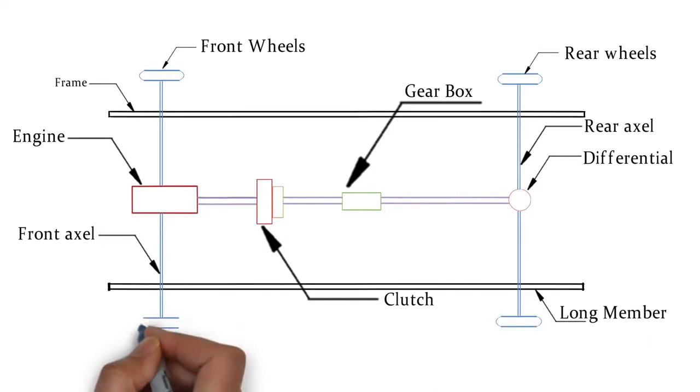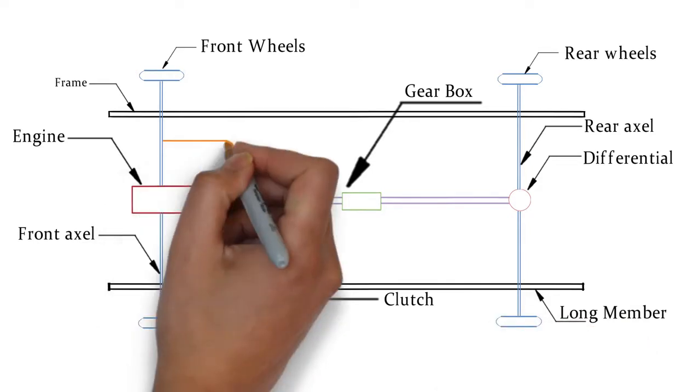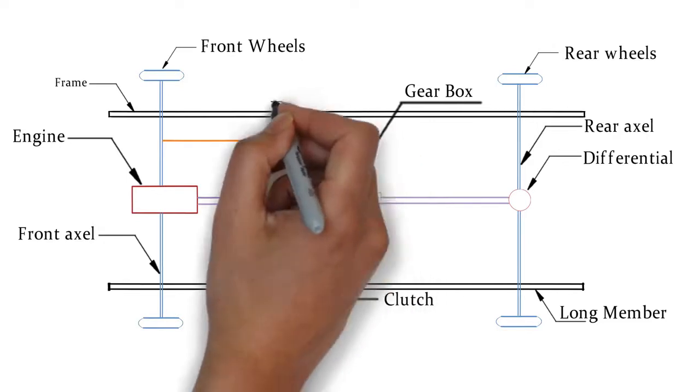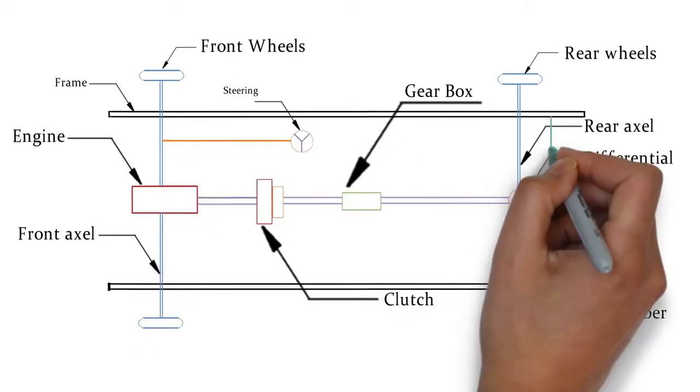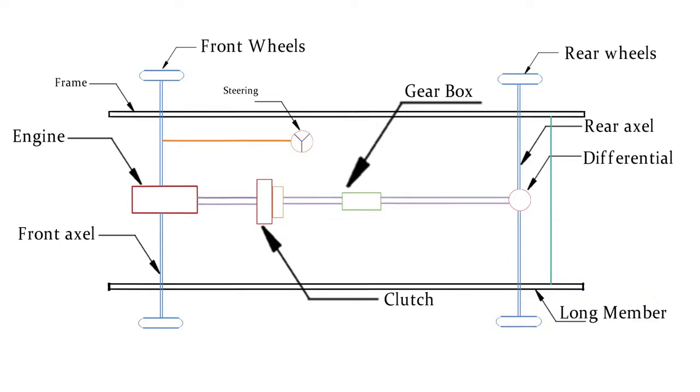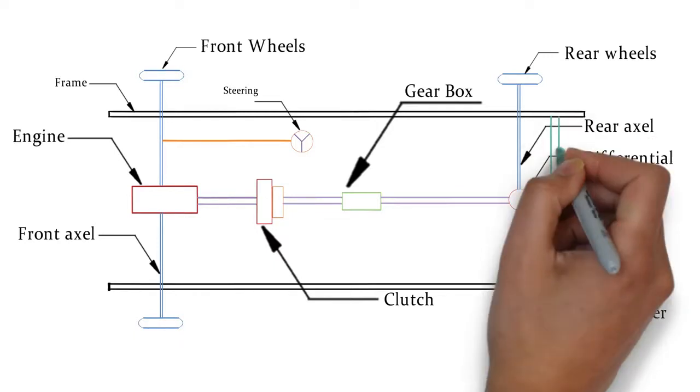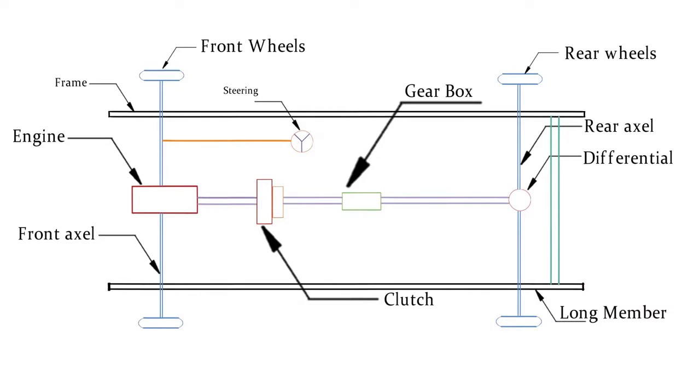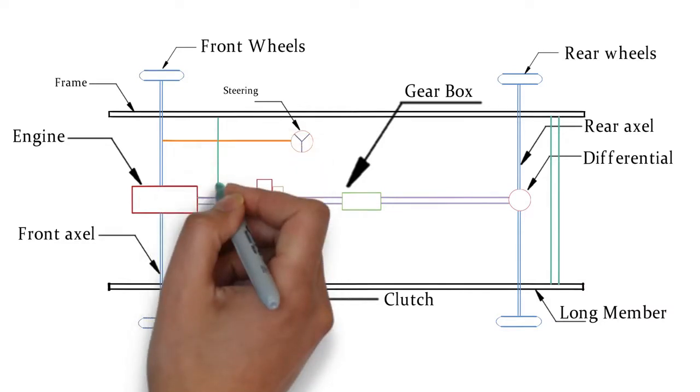Steering system, it is used to change the direction of the motion of the vehicle by turning front wheels. Suspension system, it consists of leaf springs or coil springs and shock absorbers which connect the front and rear axles to the chassis frame. It takes road shocks and also transmits the driving torque.